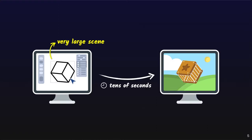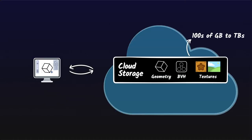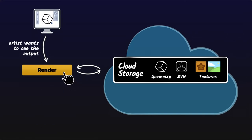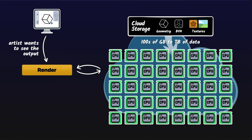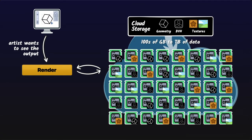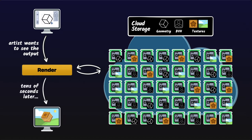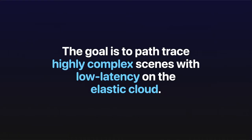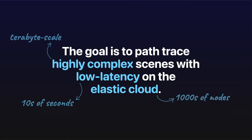In this project, we focused on one challenging task: low-latency path tracing of very large scenes. Specifically, in our setup, we have a terabyte-scale scene stored in cloud storage, including geometry, texture, and a pre-built scene BVH. Right when the user issues the render command, we seek to acquire thousands of cloud computing nodes, rapidly load scene data from cloud storage into the aggregate memory of these nodes, and produce a path-traced image of the scene, including shading and texturing, and finally shut down the nodes. Our goal is to complete this sequence for terabyte-scale scenes in tens of seconds — about the amount of time it takes the artist to go and get a snack.